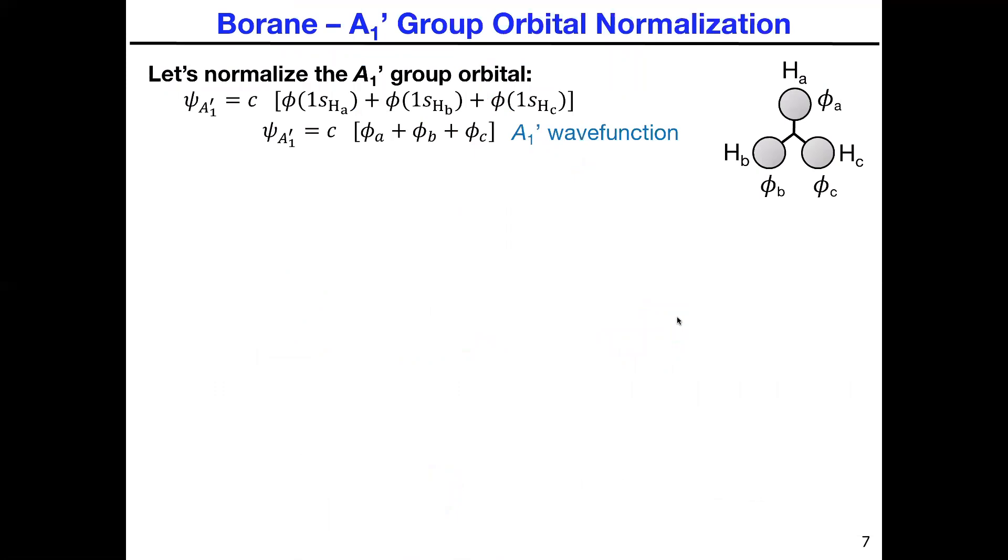If we think about what the wave function of the A1 prime group orbital looks like, we have to normalize it. So you effectively have different coefficients for each of the wave function components that are in here. For this one, this is simply the 1s orbital. And then for the 1s of HB, we're saying what is the composition or fraction of HB that will be in the final group orbital, and then of course the last one here is HC.